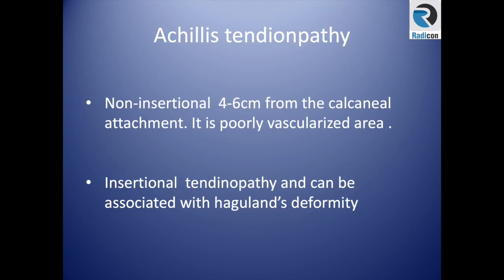Achilles tendinopathy has two locations: insertional and non-insertional. Insertional, as the name implies, is at the insertional part of the tendon. Non-insertional is usually approximately six centimeters from the calcaneal attachment — this is the relative area of poor vascularity.